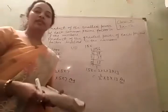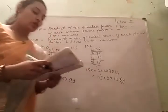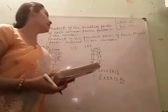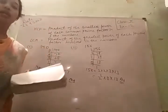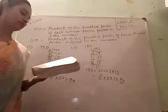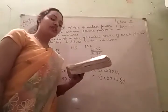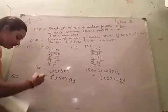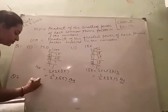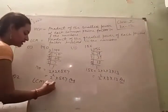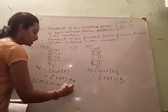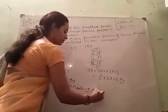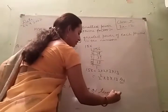Find the LCF and HCF of the following pair of integers. For a pair of two numbers, find HCF and LCM and verify that LCM × HCF is equal to the product of two numbers.